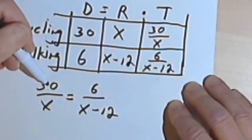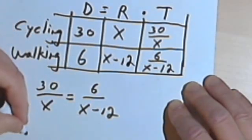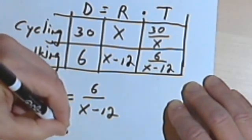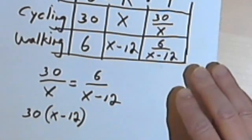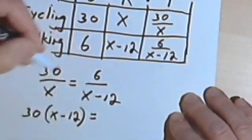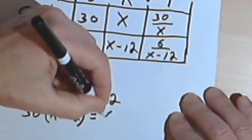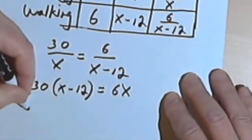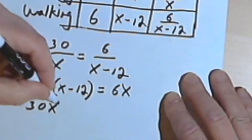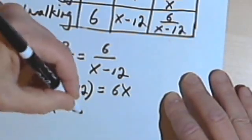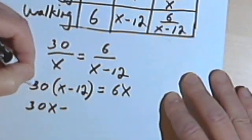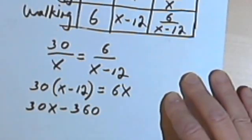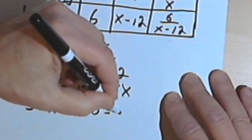So let's see. 30 times x minus 12, I'll just write that out here and distribute it as the next step, is going to equal x times 6, or 6x. So let's distribute this 30. That means I have 30x minus 30 times 12. 3 times 12 is 36, so 30 times 12 is 360. And that equals 6x.